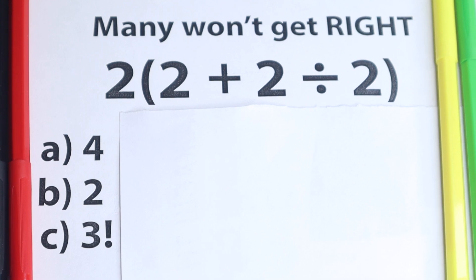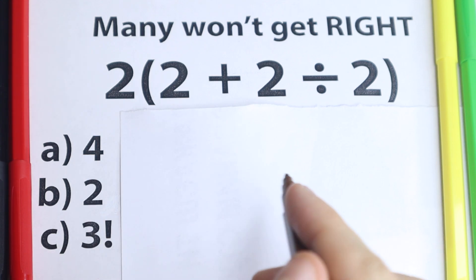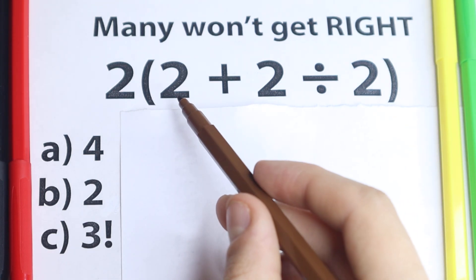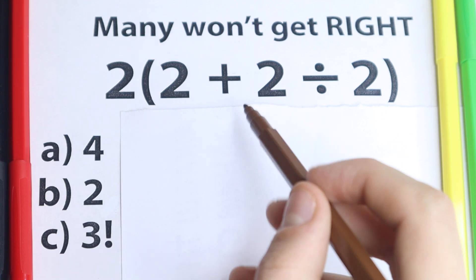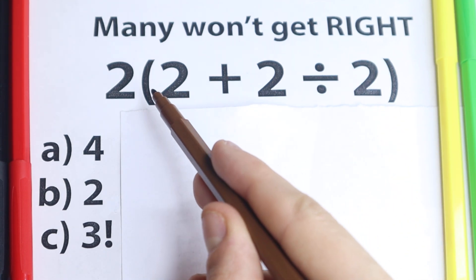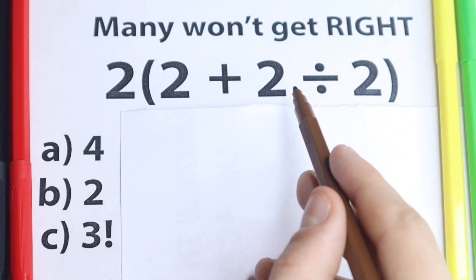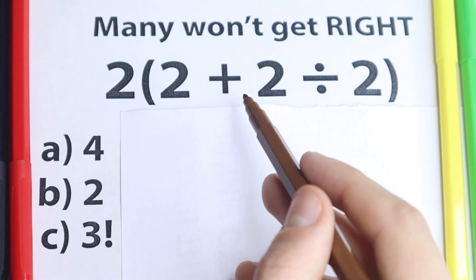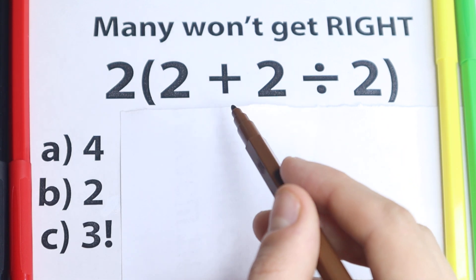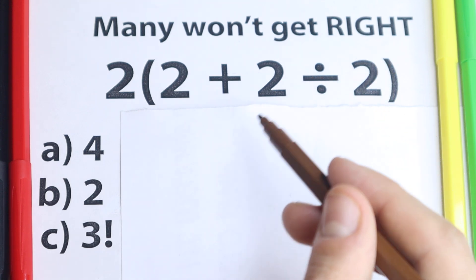Hello everyone, happy to see you here and welcome back to my channel BrainLogic. Relaxing question today — on the first side we have a very simple question: 2 and in parentheses 2 plus 2 divided by 2. It's a very simple question; we have only 2, we have multiplication, addition, division — everyone learned this stuff in the third or fourth grade. But what is the correct answer?